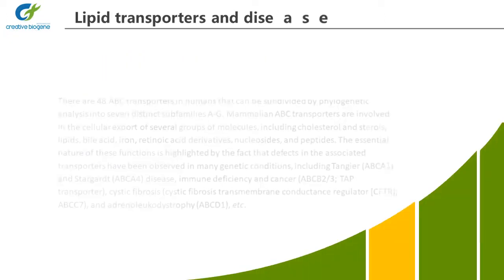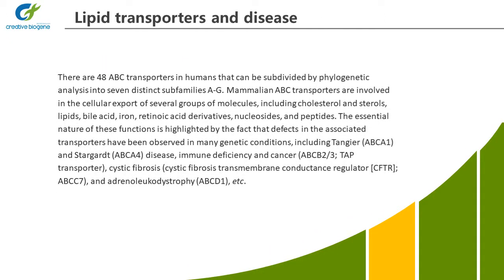Lipid transporters and disease. There are 48 ABC transporters in humans that can be subdivided by phylogenetic analysis into seven distinct subfamilies A to G. Mammalian ABC transporters are involved in the cellular export of several groups of molecules, including cholesterol and sterols, lipids, bile acid, iron, retinoic acid derivatives, nucleosides, and peptides. The essential nature of these functions is highlighted by the fact that defects in the associated transporters have been observed in many genetic conditions, including Tangier and Stargardt disease, immune deficiency and cancer, cystic fibrosis, and adrenoleukodystrophy, etc.